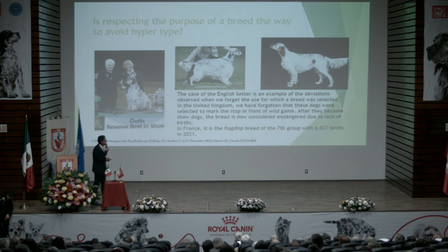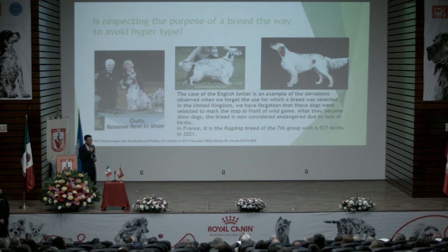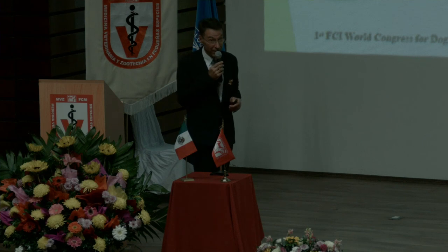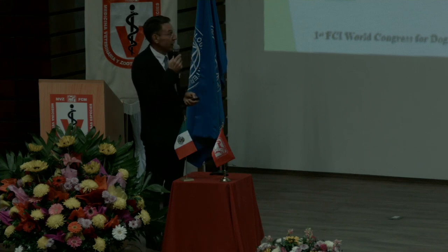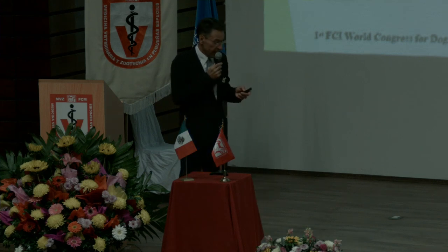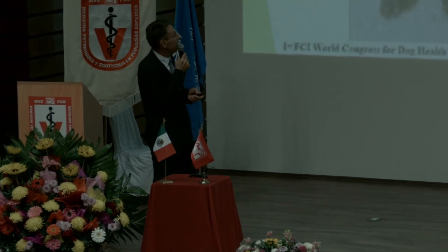Here you see a hypertypical animal with exaggerated loose skin. Another example: the English Setter — this is an example of deviation when we forget the use of the breed. In the United Kingdom, some have forgotten that this dog was selected to stop in front of wild game. After they became show dogs the breed declined. In France, it is the flagship breed of the seventh group with more than 7,000 registrations this year — so you see, if we don't fall into the hypertype and don't forget the utility of the animal, we can eliminate hypertype in this breed.